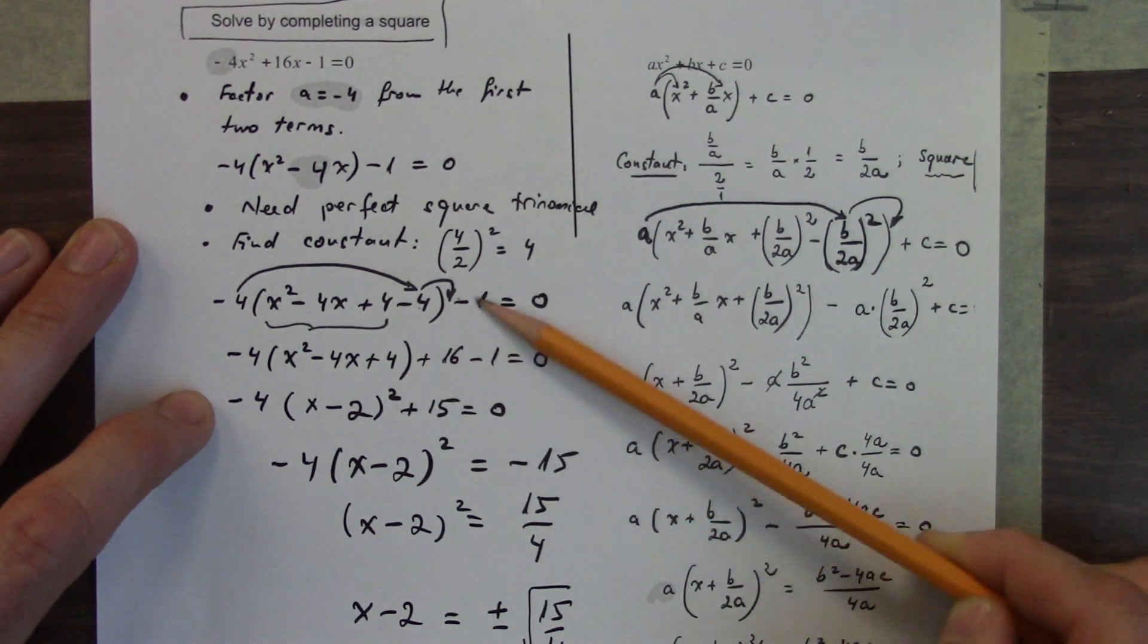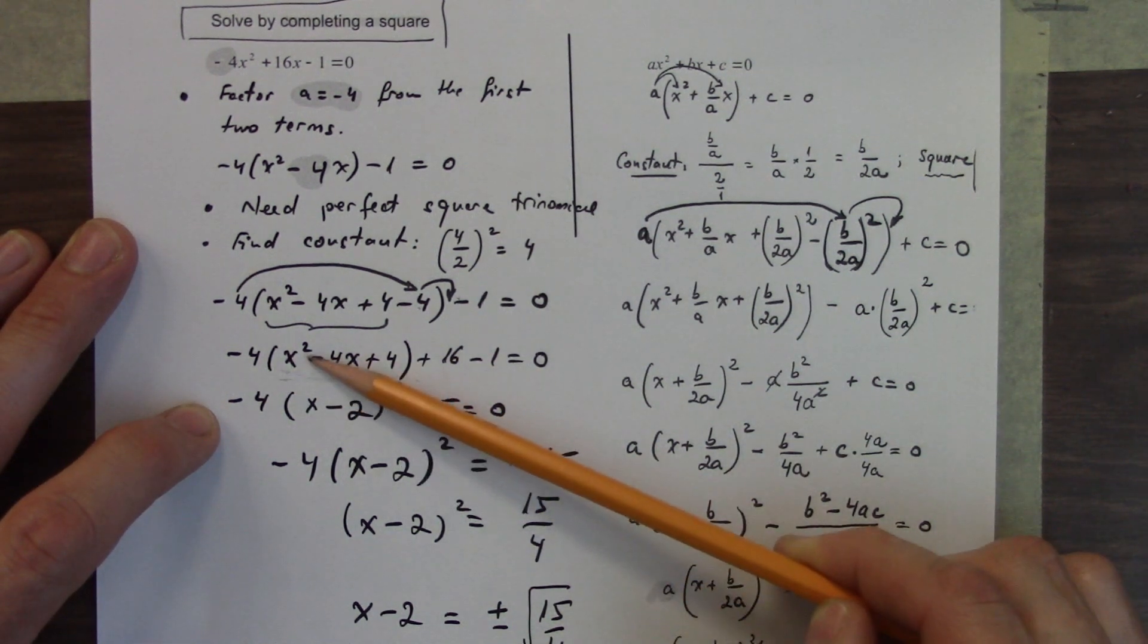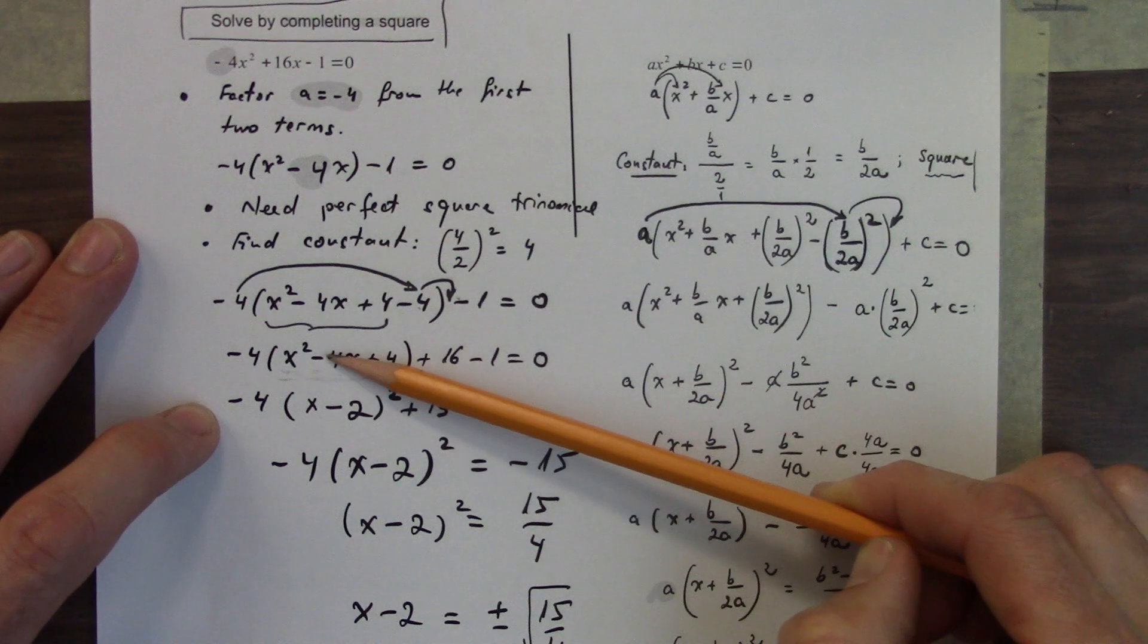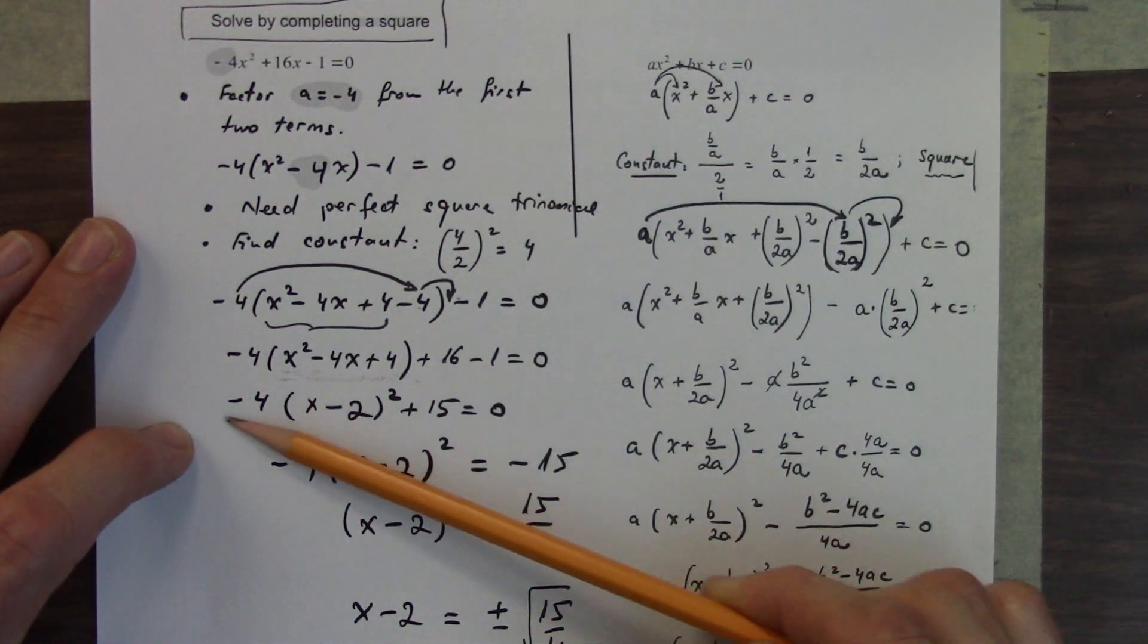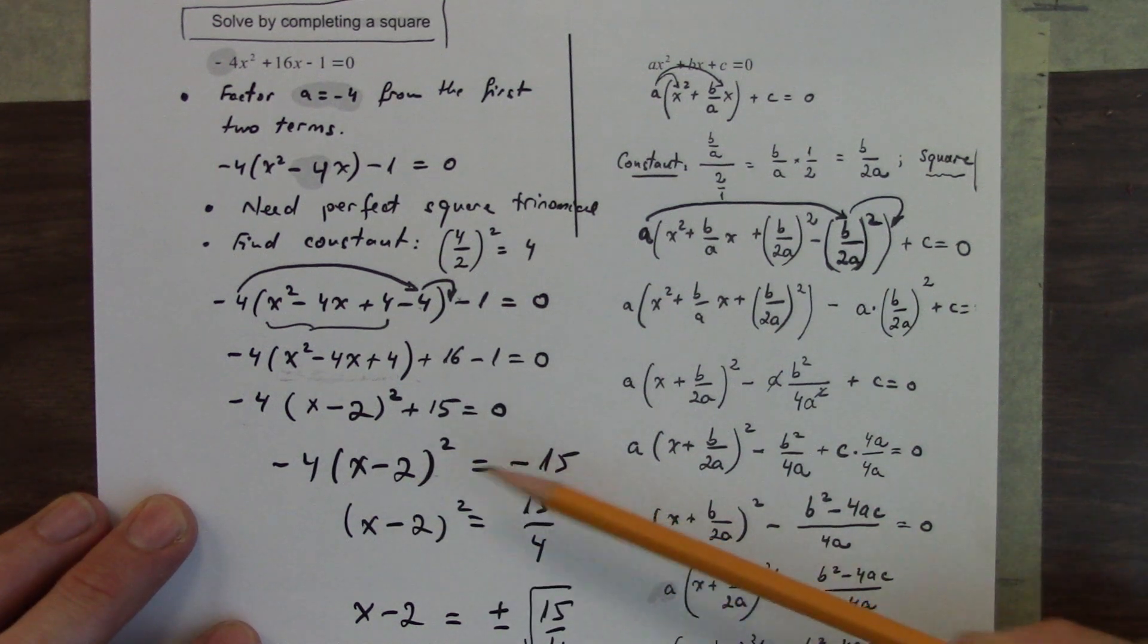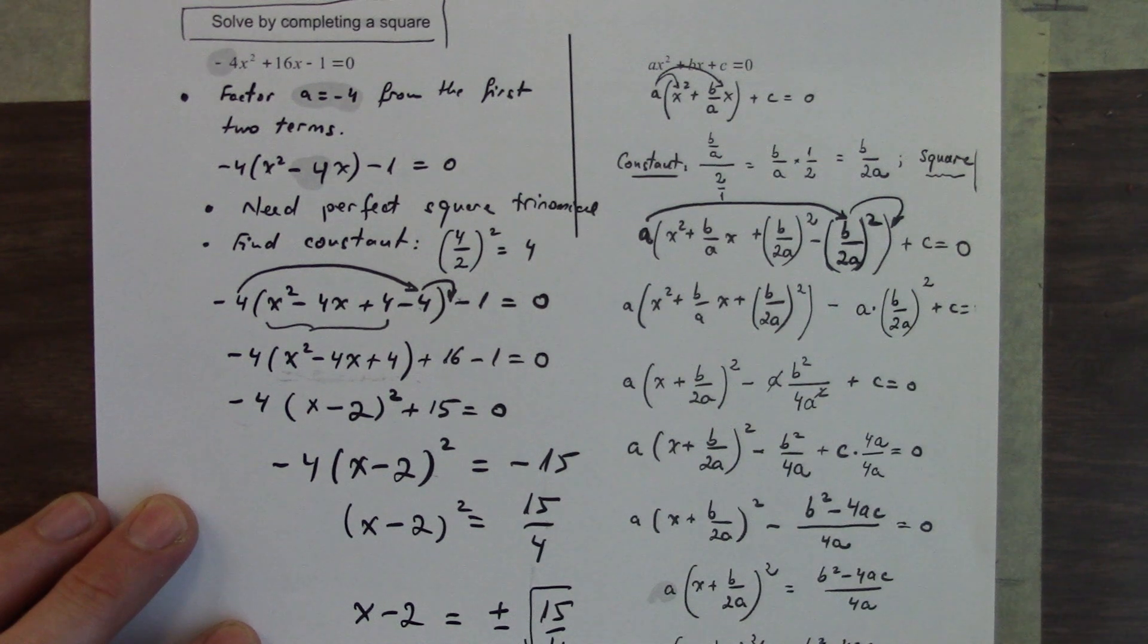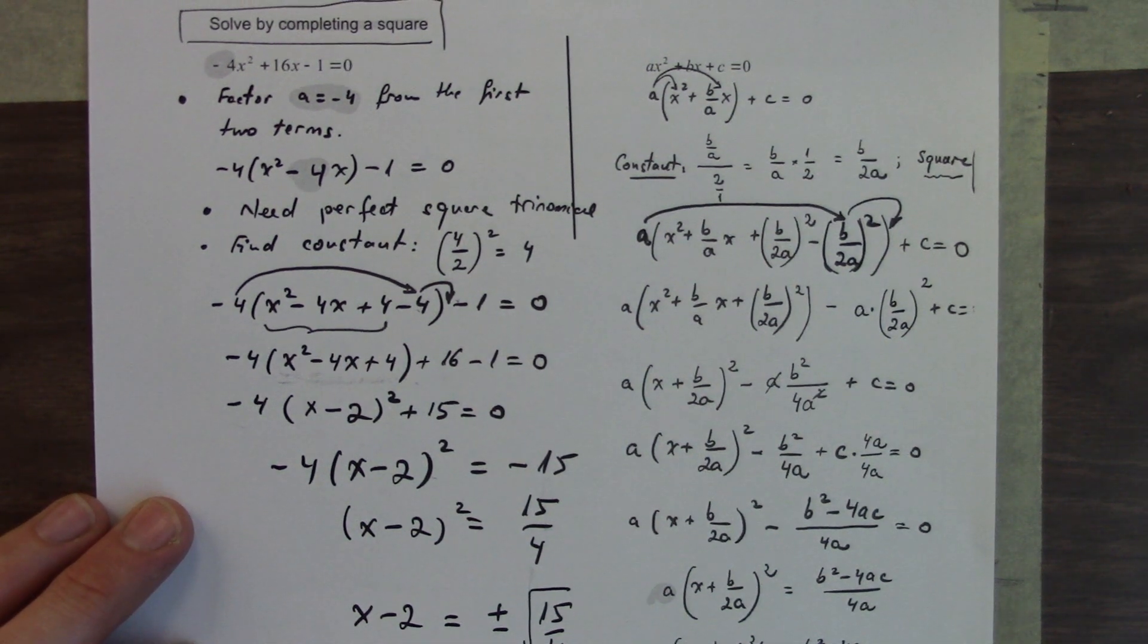Now we need to create the perfect square trinomial. We're going to take that middle term, divide it by 2 squared, which gives us 4 again. So we're going to add 4 and minus 4. Then we need to get that last term out of the brackets. If there's an a value, you need to multiply it by the a value to release it from the brackets. That gives us positive 16.